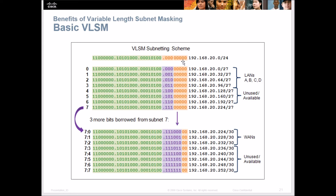We start at the top of the subnet mask chart and break those up. We start with our initial slash 24 on our CIDR addressing, then break each one up, giving them a /27, /27, /27 on down. Then we borrow three more bits, which gives us our WAN addresses — and we can break those up even further.